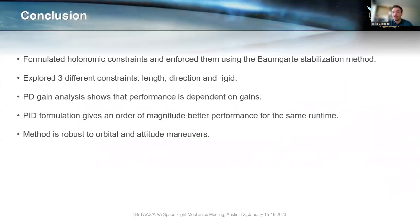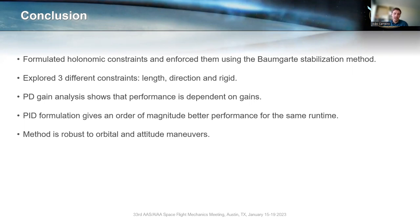To conclude: we've formulated the relationship between two spacecraft using holonomic constraints, and enforced those constraints using the Baumgart stabilization method. We've explored three different constraints of increased rigidity. For the PD gain analysis, performance is dependent on gains up to a certain point, after which it plateaus. Using a PID formulation instead, we can achieve the same constraint violation performance with an order of magnitude better runtime — which is very important. Finally, we've shown that the method is robust to orbital and attitude maneuvers.